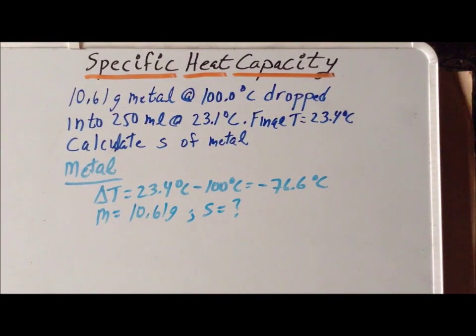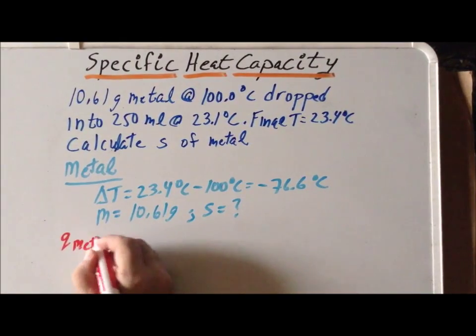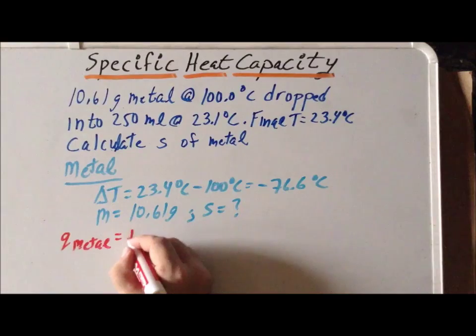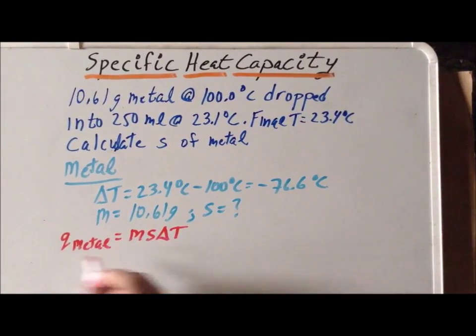So for the time being, the Q for the metal is M, S, delta T, but where M, S, and delta T all refer to what's happening with the metal.